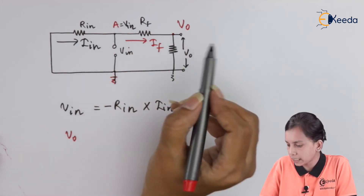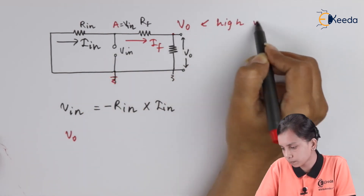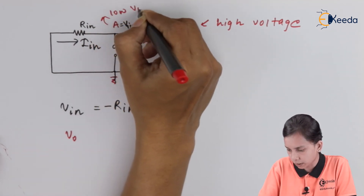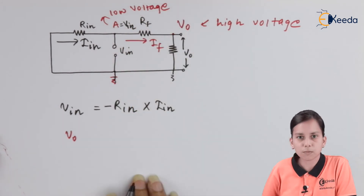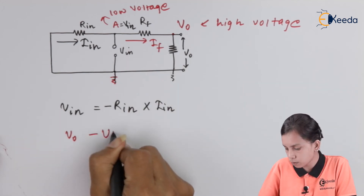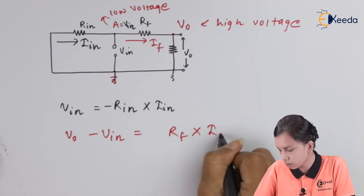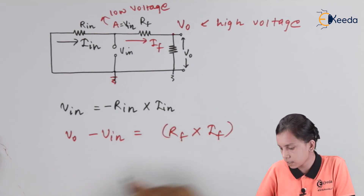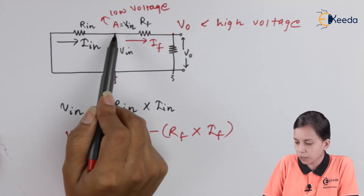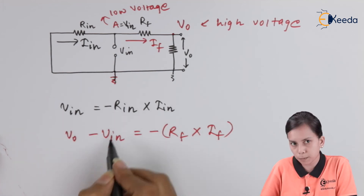Taking V_0 as the high reference and V_input as the low reference for the R_F branch, we can write: V_0 minus V_input equals R_F times I_F, with a minus sign applied because the current is flowing from low to high potential. So V_0 minus V_input equals minus R_F times I_F.